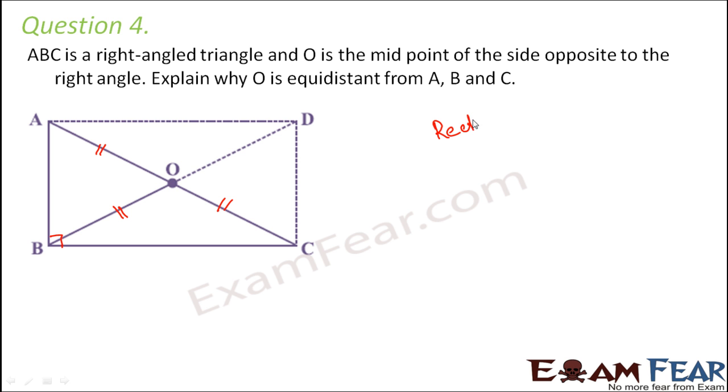So this has actually formed a rectangle. Now if you recall the properties of rectangle, what do we see? We see that in case of rectangles, the diagonals are equal in length and also the diagonals bisect each other.